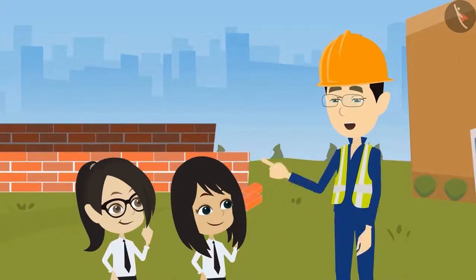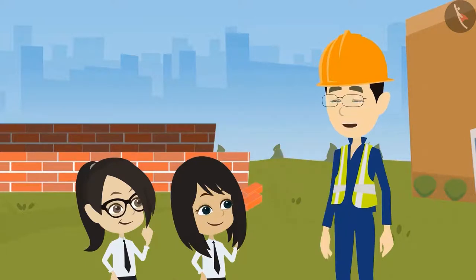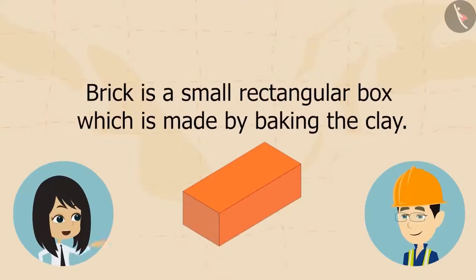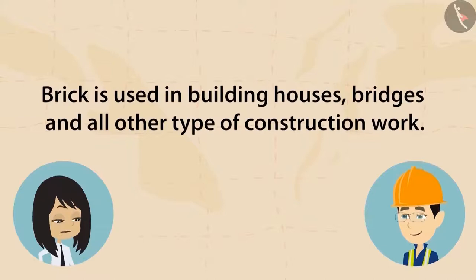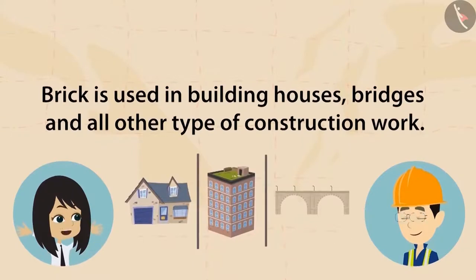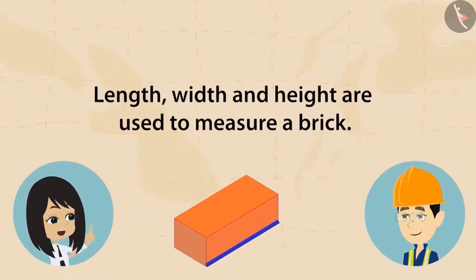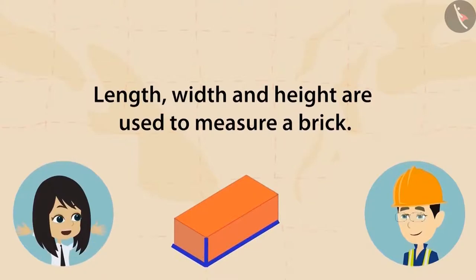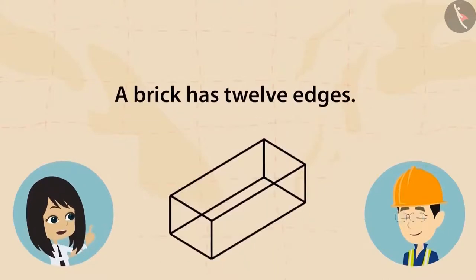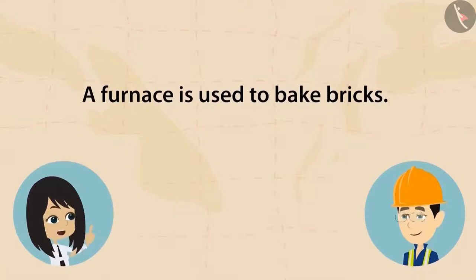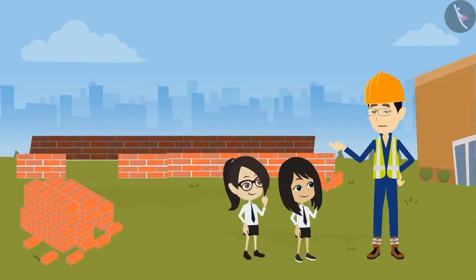I will give it to you. But before that, let's recall what I told you last time. Sir, last time you told us: brick is a small rectangular box which is made by baking the clay. Brick is used in building houses, bridges or all other types of constructions. Shape of brick is cuboid. Length, width and height are used to measure a brick. A brick has 12 edges and 6 faces. A furnace is used to bake the bricks. Very good, you remember everything.